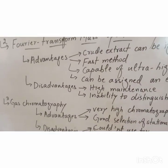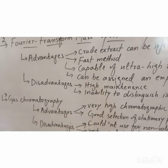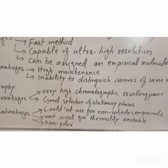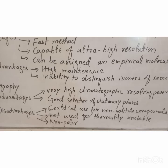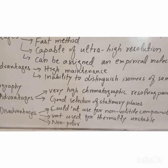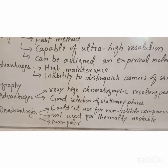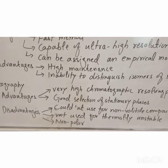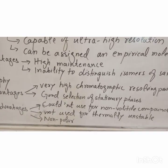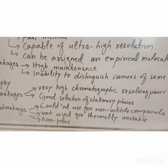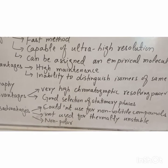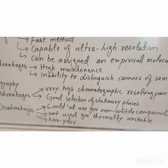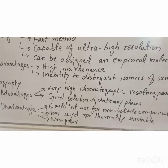Third is gas chromatography mass spectrometry. Advantages are very high chromatographic resolving power and a good selection of stationary phases. The disadvantages are that it could not be used for non-volatile compounds - it is only used for volatile compounds. It is not used for thermally unstable compounds and only used for non-polar substances.